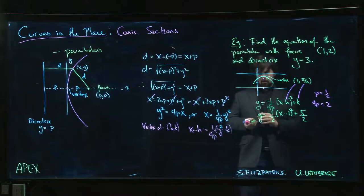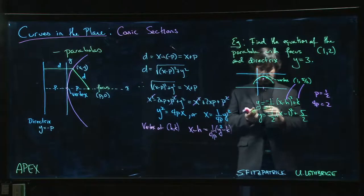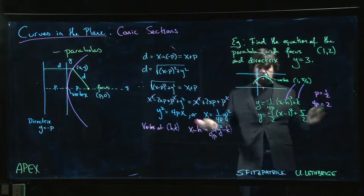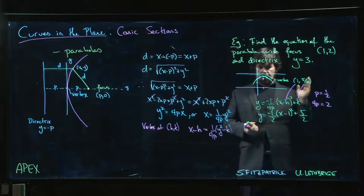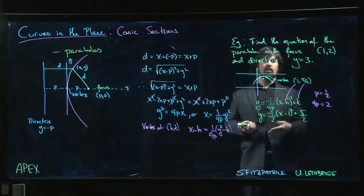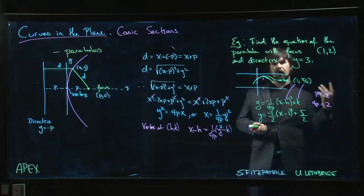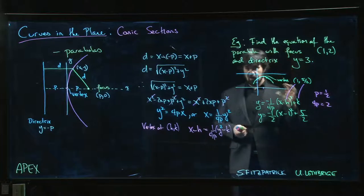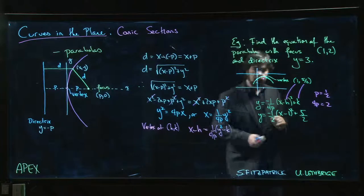Okay, all right, so we can draw the parabola, we can get the equation of the parabola, we're good to go. Now the other thing that you might want to be able to do is if somebody gives you the equation, you want to be able to extract all the information - what's the vertex, what's the focus, what's the directrix. We'll try that in the next example.